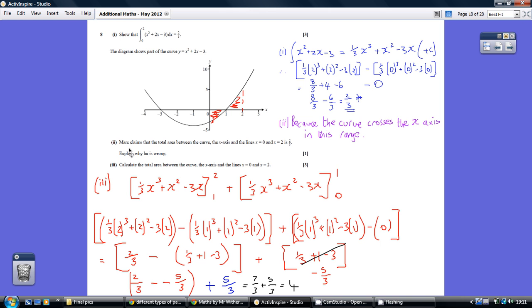Part 2: Explain why the total area between the curve is not 2/3. This is because between 2 and 0, we actually cross the x-axis.